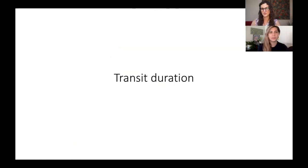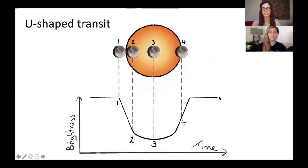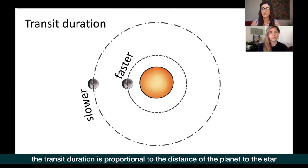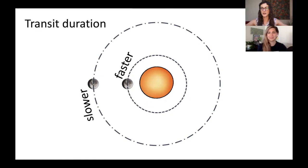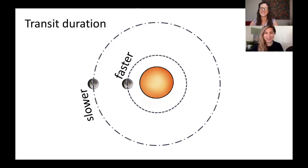Another transit characteristic is the transit duration — from start to finish. Transit duration is proportional to how far the planet is from its host star. A planet very close to its star moves much faster, so the transit duration is shorter. A planet on a more distant orbit moves slower, and the transit duration is longer. This is due to angular momentum — similar to a figure skater or someone spinning on a swivel chair.